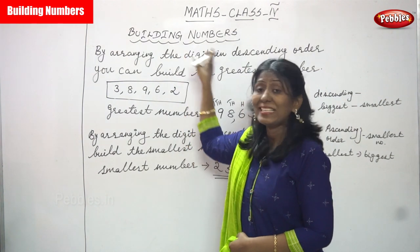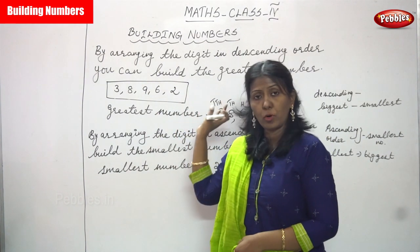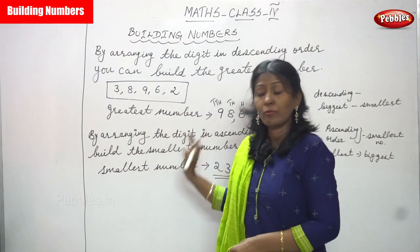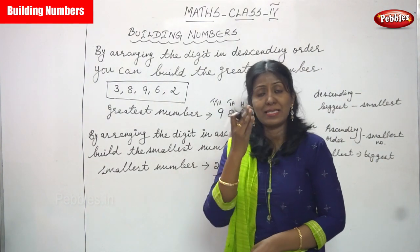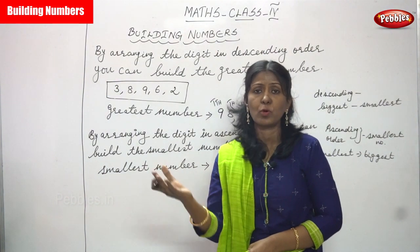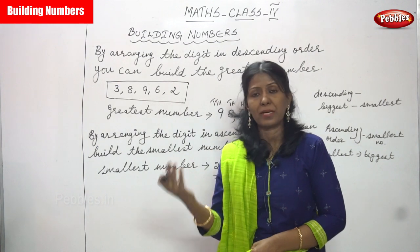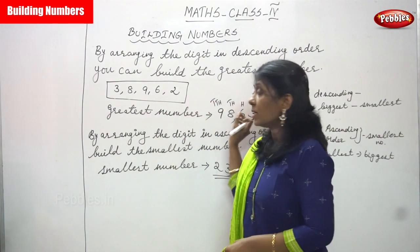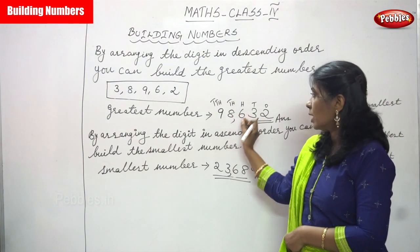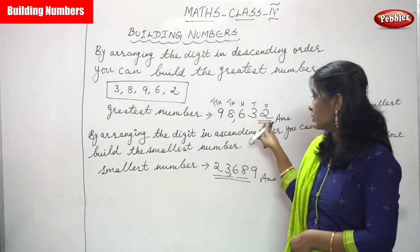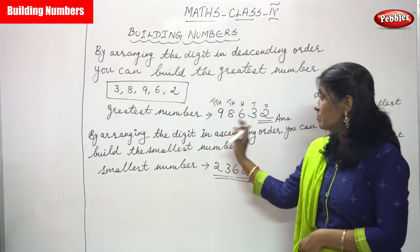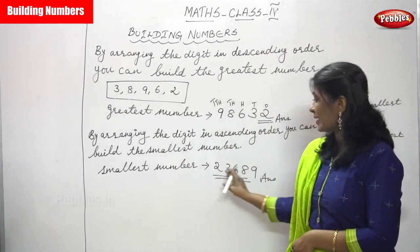So greatest number and smallest number — this is the way you find building numbers. The numbers given in the box are in jumbled order. To find the greatest number, use descending order. To find the smallest number, use ascending order. Descending means biggest to smallest; ascending means smallest to biggest. While writing the number, do not use a comma between the digits. When reading the number, use commas: 98,632 and 23,689.